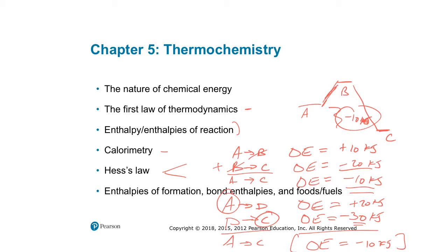A path-independent quantity means it doesn't matter how we get from A to C — the delta E should still be minus 10 kJ. Some values are not path-independent; these have to do with how heat and work go together. If you imagine doing a reaction like burning octane to put a car into motion, you're getting energy out of that reaction, using some to heat your engine and some to put your car into motion.